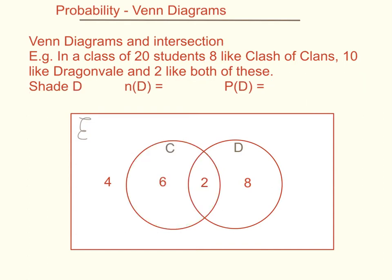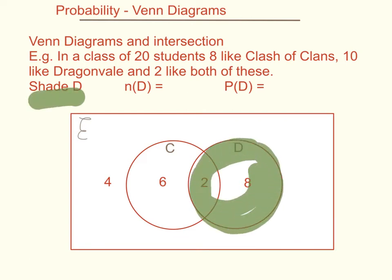Continuing on, this one says to shade D — colouring in the Dragonvale circle. The number in D is 2 plus 8, which equals 10. Therefore the probability of D is 10 over 20, which equals 0.5.